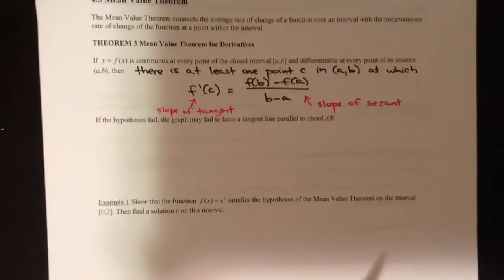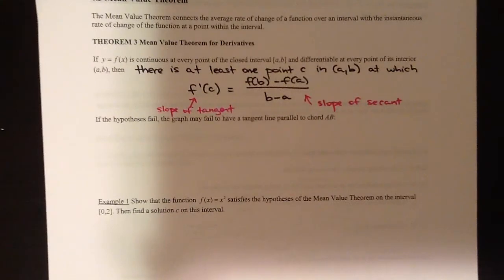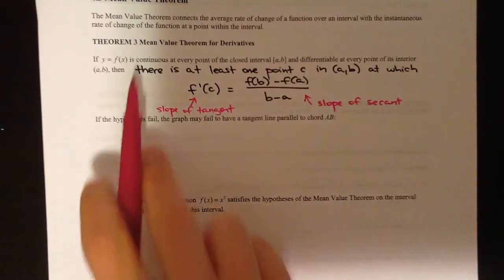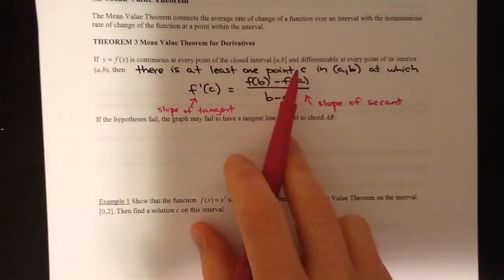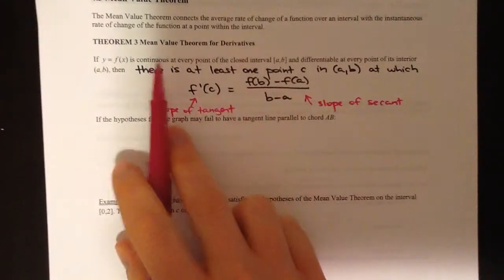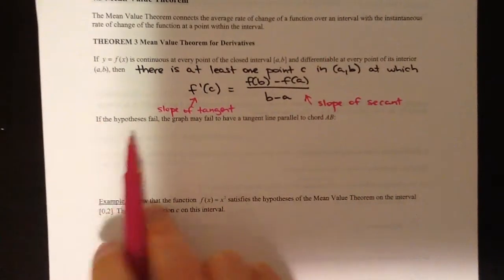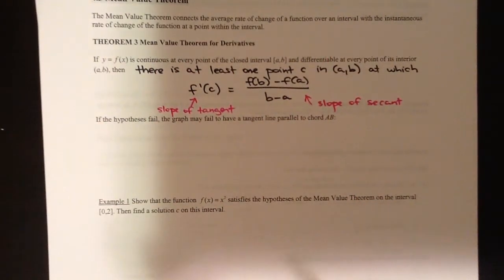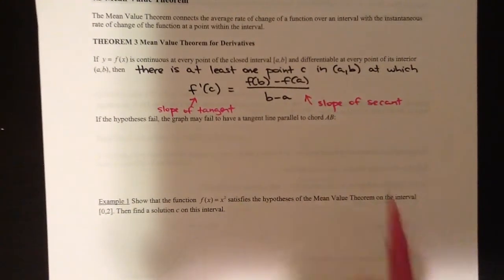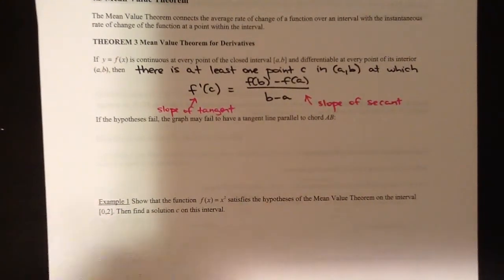Let's draw a little picture. It's very, very important that we have the hypotheses — that f is continuous and that it's differentiable. If the hypotheses fail, then you're not necessarily going to have a tangent line that's parallel to the chord AB, which is the secant line that goes from A to B.